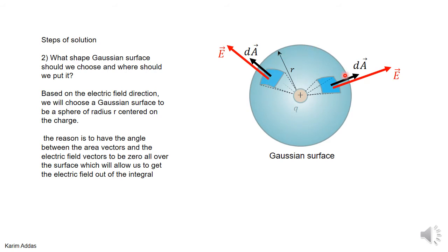By making a sphere, a spherical surface, we know that the electric field vector and the area vector are going to be always parallel. So the angle is always going to be zero. So that way I can get rid of the dot product in Gauss's law. We're going to see this in detail in the next slide.